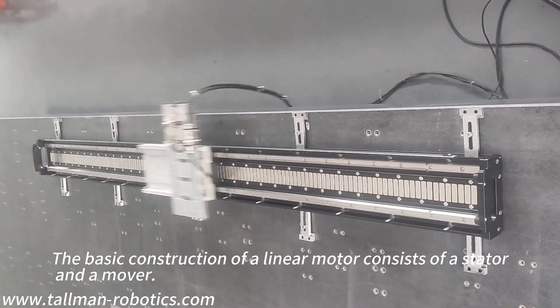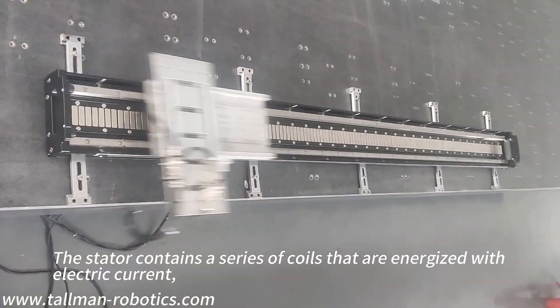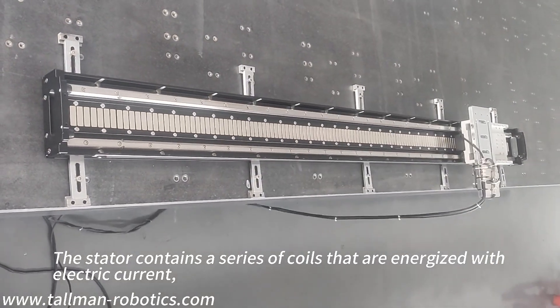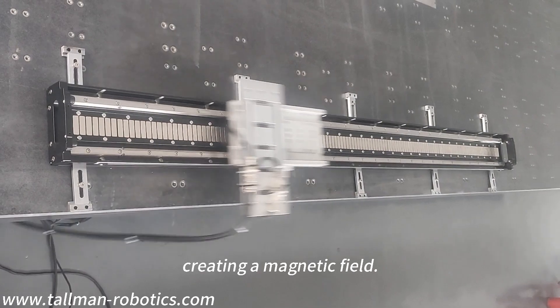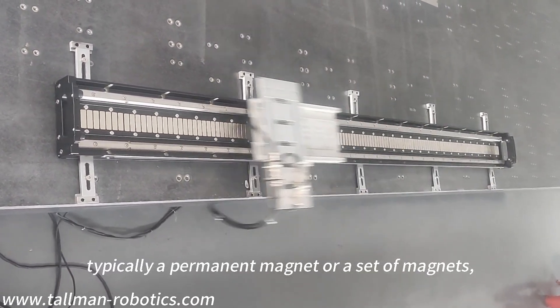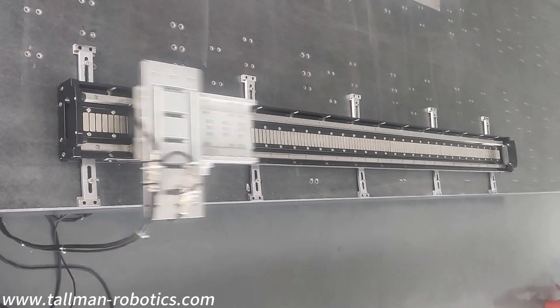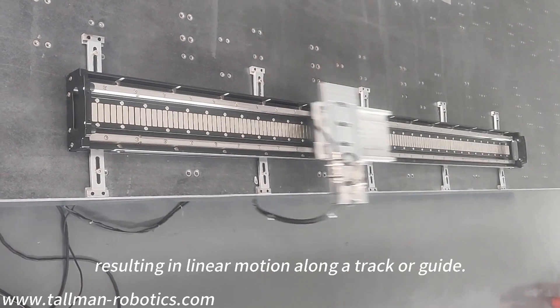The basic construction of a linear motor consists of a stator and a mover. The stator contains a series of coils that are energized with electric current, creating a magnetic field. The mover, typically a permanent magnet or set of magnets, is attracted or repelled by the magnetic field, resulting in linear motion on a track or guide.